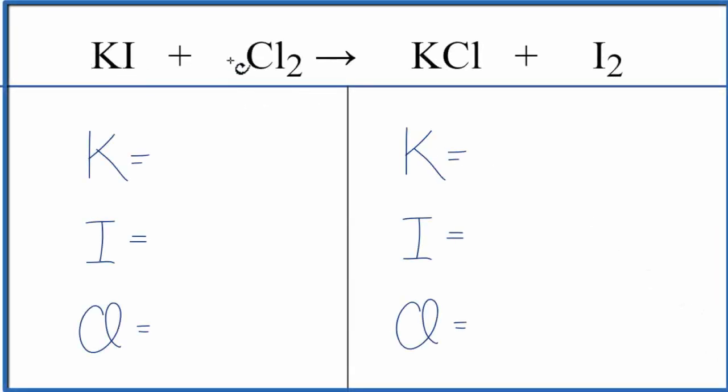In this video we'll balance KI plus Cl2. That's potassium iodide plus chlorine gas. Let's count the atoms up.